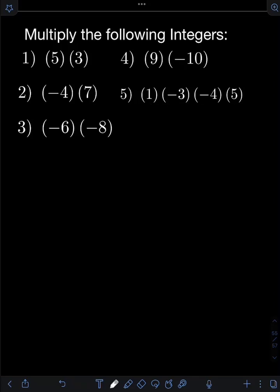Let's solve these problems. Multiply the following integers. So let's start with number 1, 5 times 3. But before we solve this problem, let's first have the rules in multiplying integers.